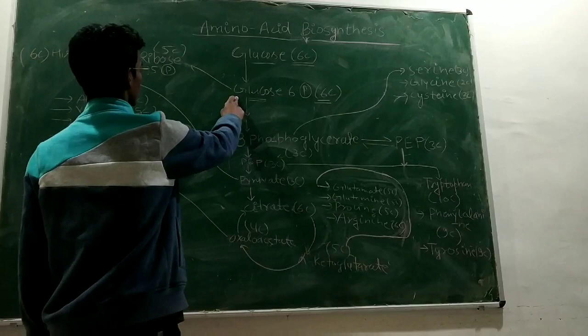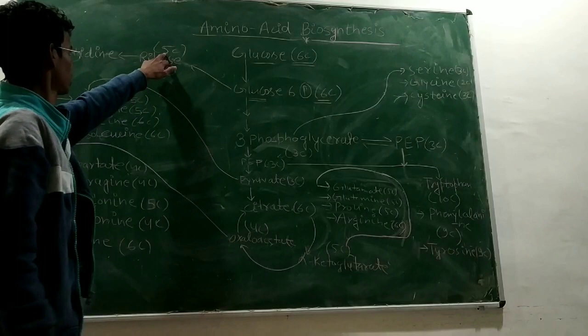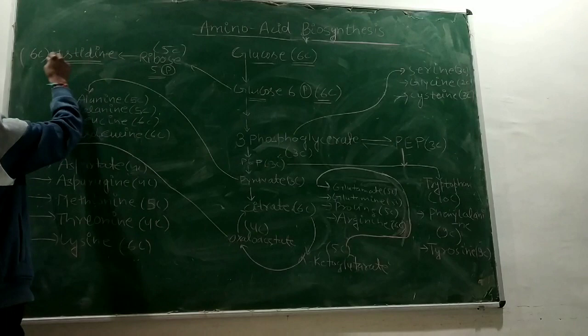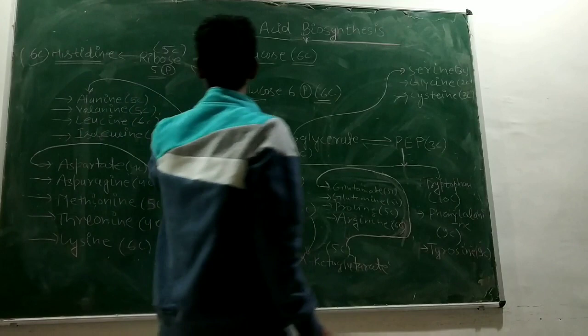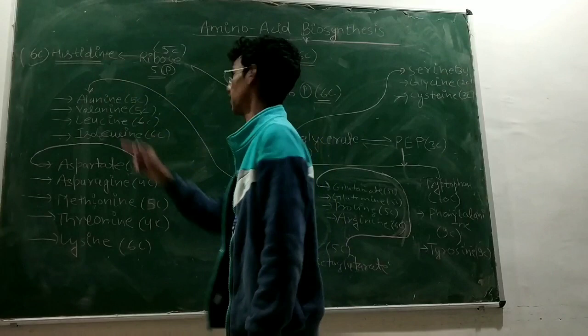We have a 5-carbon containing compound, and from this we get 3 amino acids. Then we get a 6-carbon containing compound.